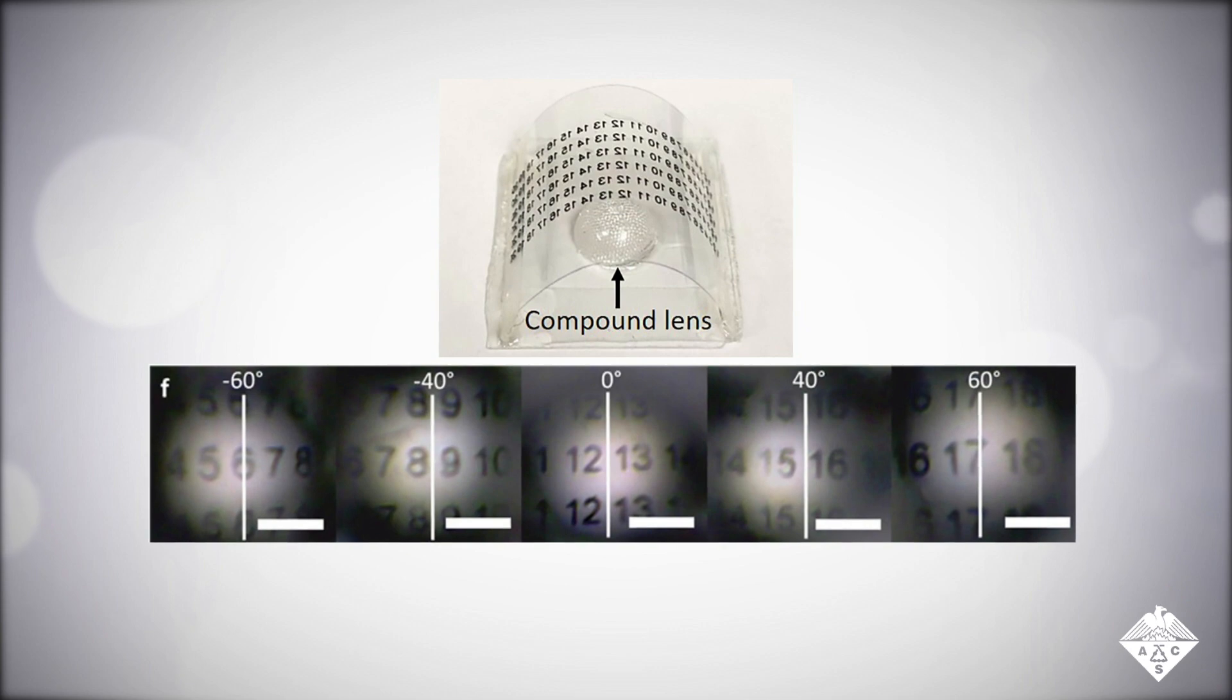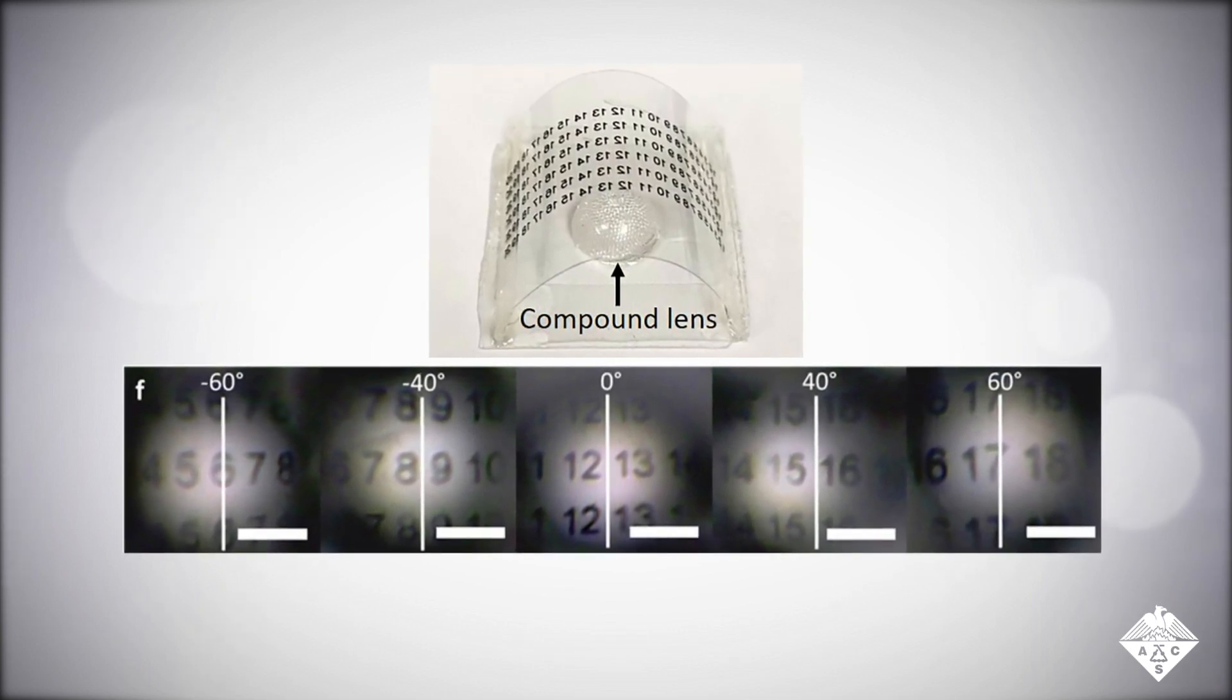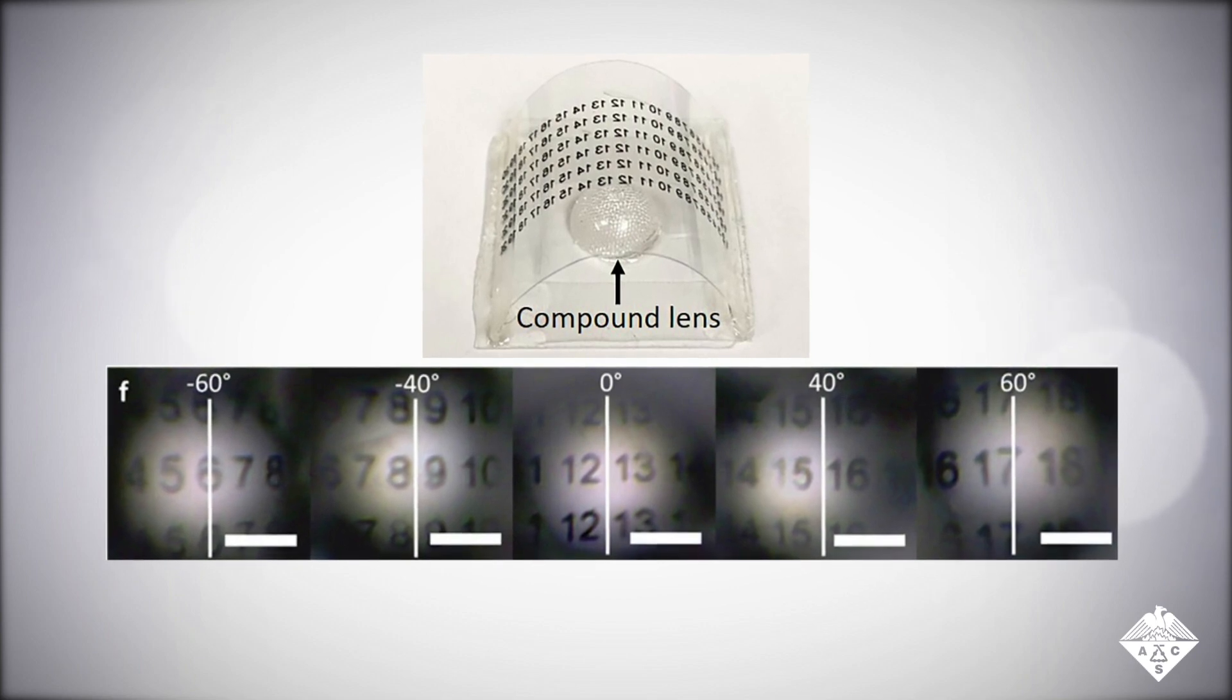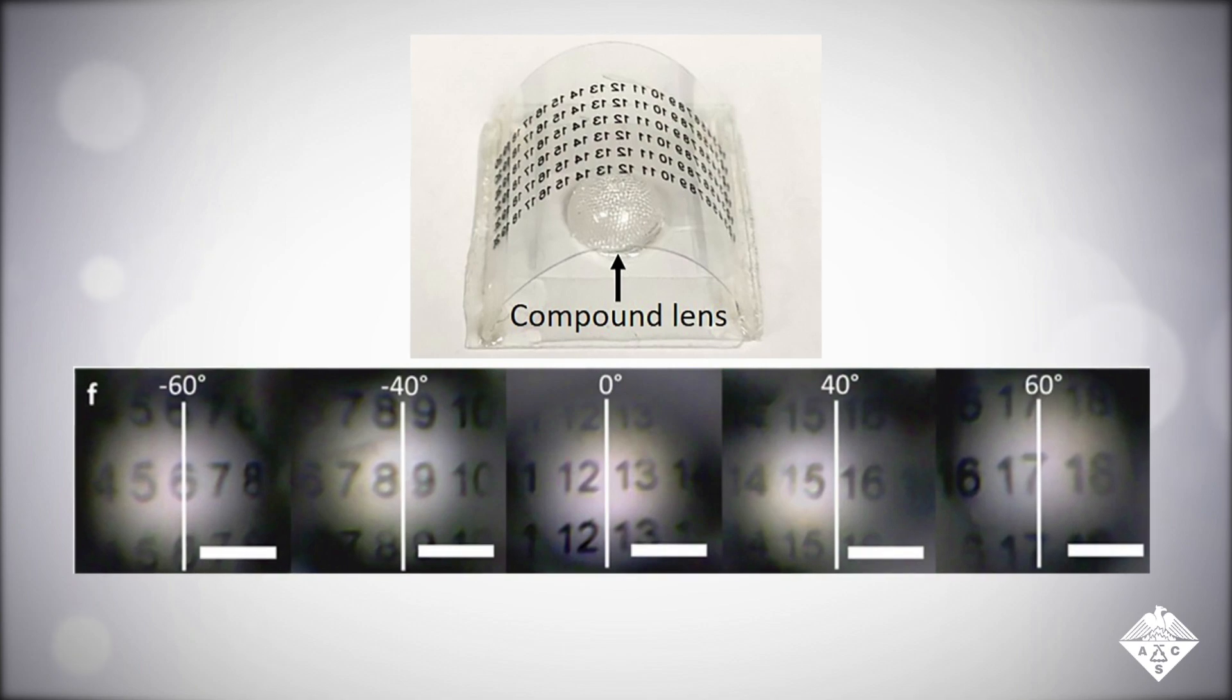The resulting compound lens had a viewing angle of 149 degrees, similar to that of the mosquito eye. The researchers determined this by using the compact lens to read numbers 1 through 20 printed on a transparent sheet placed above the lens.